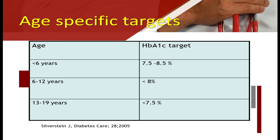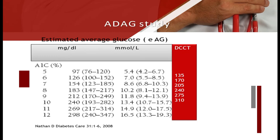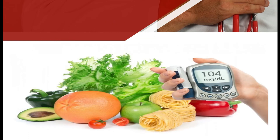There are age-specific targets for HbA1c: less than 6 years — less than 8.5%; 6 to 12 years — less than 8%; 13 to 19 years — less than 7.5%. Good diabetic control leads to fewer complications in the future.